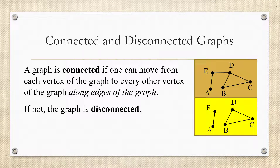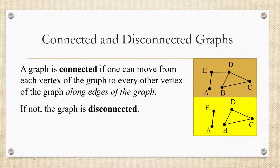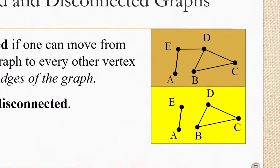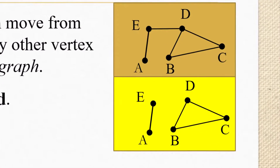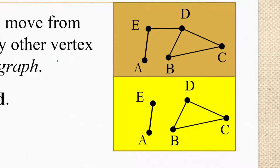This graph in yellow is an example of a graph that's disconnected. It's not connected because there's no way to get from vertex A over to vertex B without going off the graph. There are no edges connecting A to any of the vertices B, D, or C.